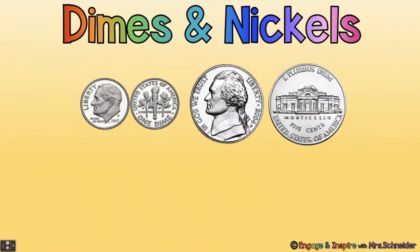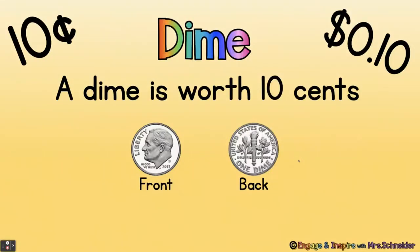And here is a nickel — the front of the nickel and the back of the nickel. A dime is worth 10 cents. This is one way to write 10 cents with the cent symbol, and this is another way to write 10 cents with the dollar symbol. See, this says there are zero dollars and then there's a decimal point — 10 cents.